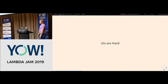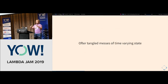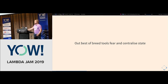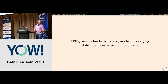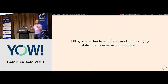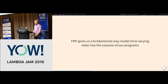Why should you care? UI is hard — it's often a very tangled mess of time-varying state. I've built up the opinion that even our best-of-breed tools like Redux and Elm sort of fear and centralize state in one big monolithic special place for the whole app. To me that feels very anti-modular. I want to build widgets that have their own time-varying state and can talk to each other in a synchronized way. FRP gives us that fundamental way to model time-varying state into the very essence of our programs.